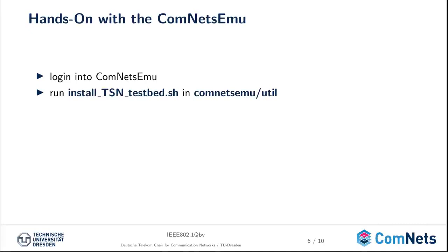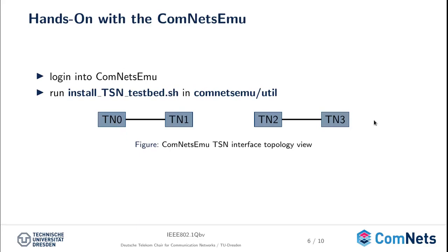Let's start our example with the ComNets EMU. First, you have to check out the ComNets EMU and set up the VM by running the vagrant start command, described in chapter 13. As an additional step for the TSN simulation, you have to run the install_TSN_testbed.sh script, which is placed in the ComNets EMU slash utility directory. If you have run this script, which depends on two steps, you will upgrade your kernel to version 5.2 and install a special improved network driver which is able to simulate the TSN features we want to show.